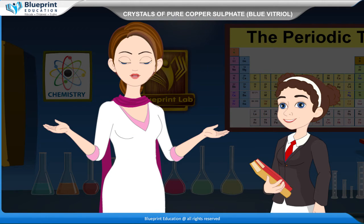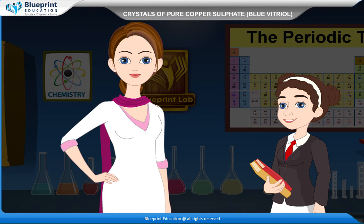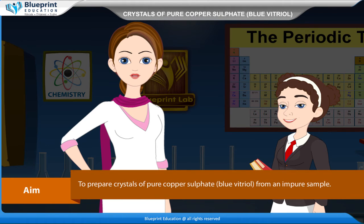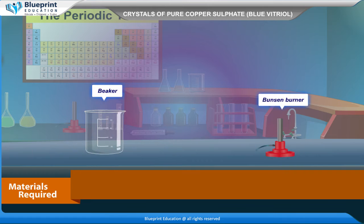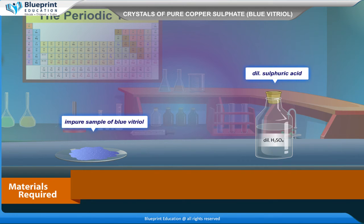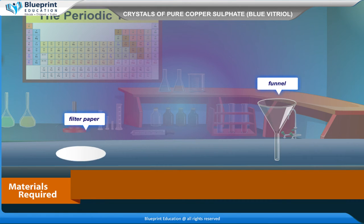Let's do an experiment. Our aim here is to prepare crystals of pure copper sulfate, blue vitriol, from an impure sample. Materials required are: beaker, Bunsen burner, wire gauze, tripod stand, impure sample of blue vitriol, dilute sulfuric acid, concentrated H₂SO₄, china dish, filter paper, and funnel.